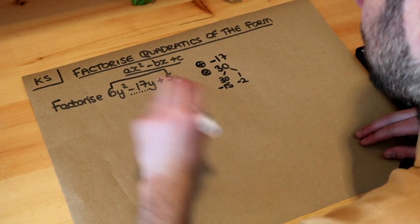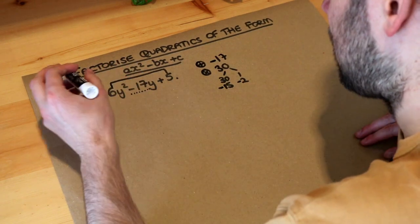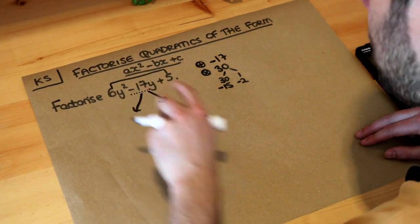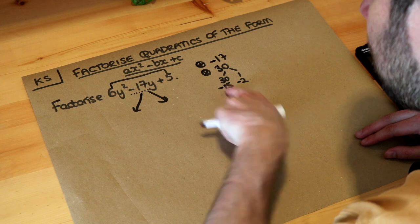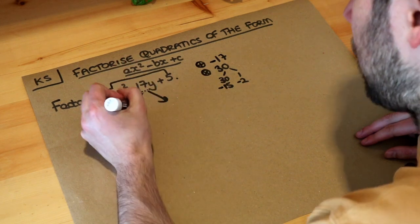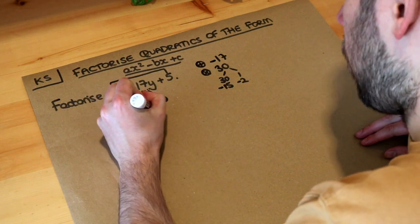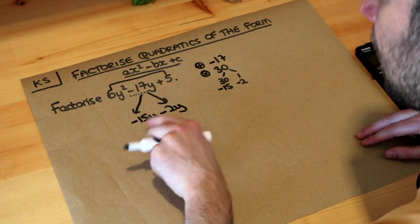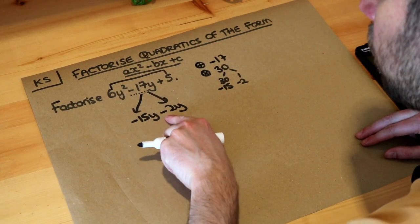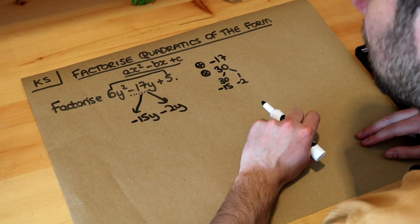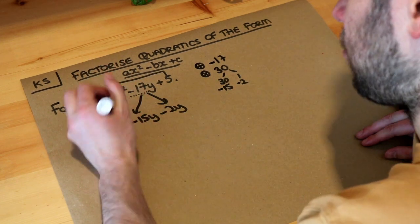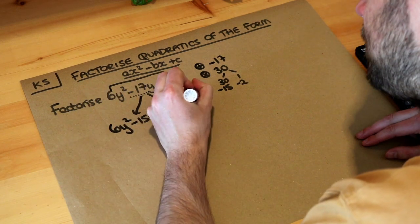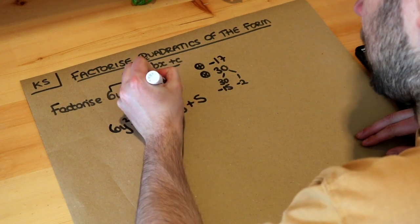Once we find these two numbers we split the middle term. So we split this middle term using those two numbers — the minus 17y we're going to split into minus 15y and minus 2y, because minus 15y minus 2y simplifies to minus 17y. We've still got the 6y squared and the plus 5, so we split the middle term here.